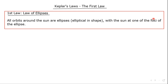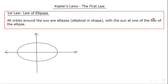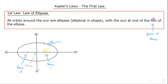So what is a focus? An ellipse roughly looks like an oval shape. It has a center, similar to the center of a circle, but it also has two special points called foci — focus one and focus two. Together they're called the foci, which is the plural of focus. So if the Earth is going around the sun, the sun would be located at one of those foci.